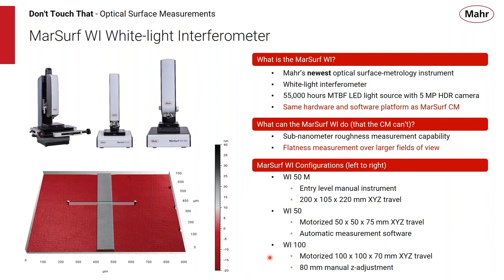WI configurations: the WI-50M features manual XYZ stages (200×100×220mm) — the only manual-stage option, made possible by interferometry's larger fields of view with high vertical resolution. The WI-50 offers 50×50×75mm motorized stages; the WI-100 offers 100×100×70mm motorized stages plus 80mm of manual adjustment. Both the WI-50 and WI-100 support automation software.